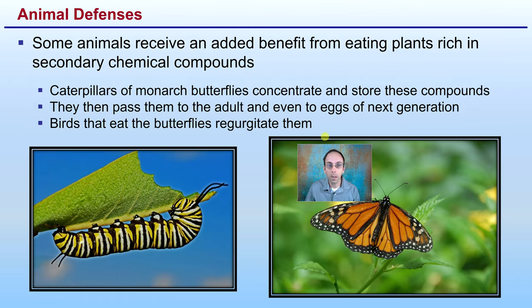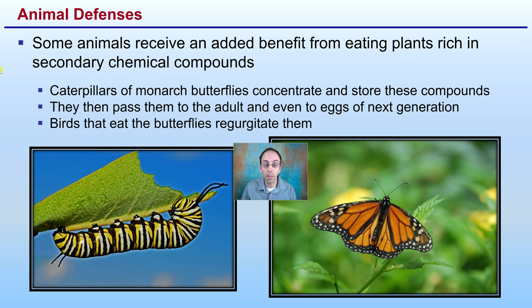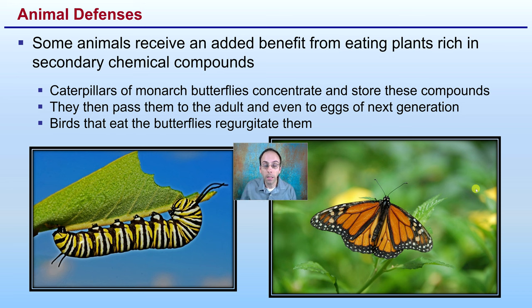For animal defenses, some animals receive an additional benefit from eating plants rich in secondary chemical compounds. For example, caterpillars of the monarch butterfly concentrate and store these compounds, then pass them on to the adult and even the potential eggs of the next generation. Birds that eat the butterflies regurgitate them due to their bad taste — an example of an insect taking in those compounds and carrying them over to benefit from reduced predation.